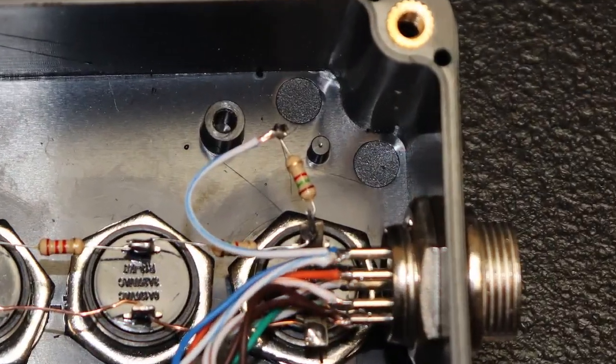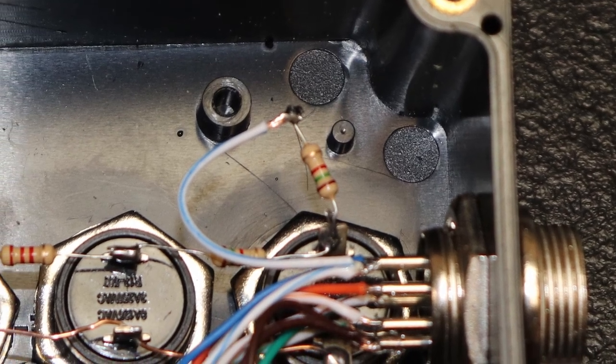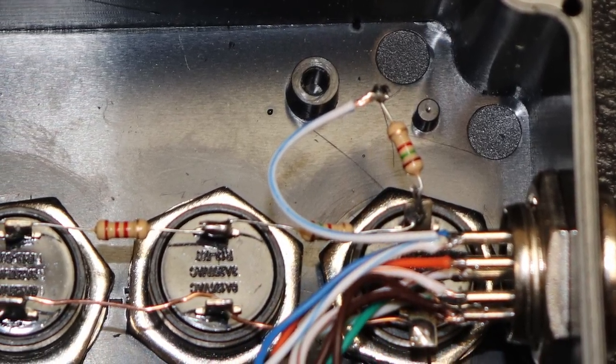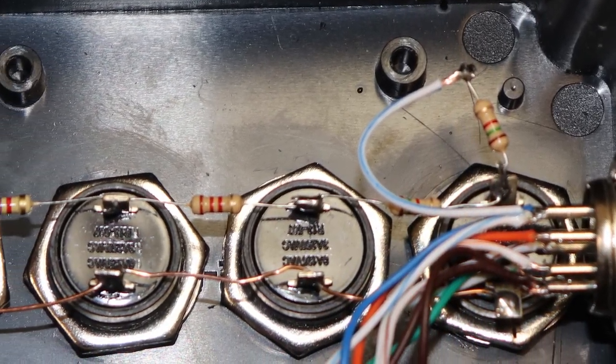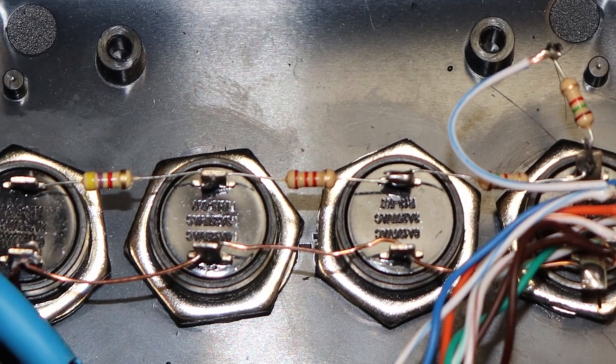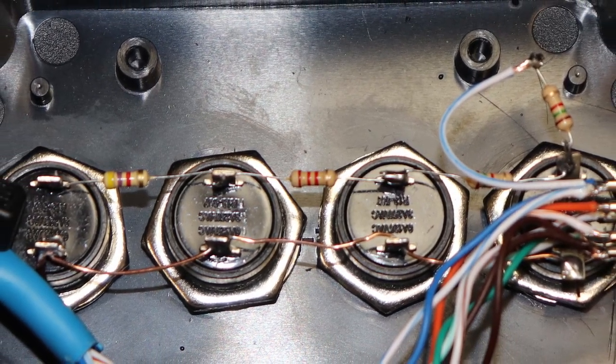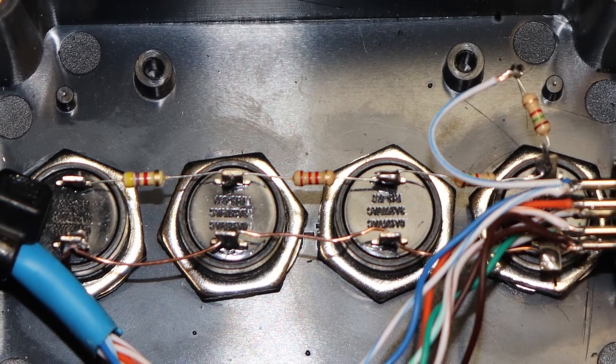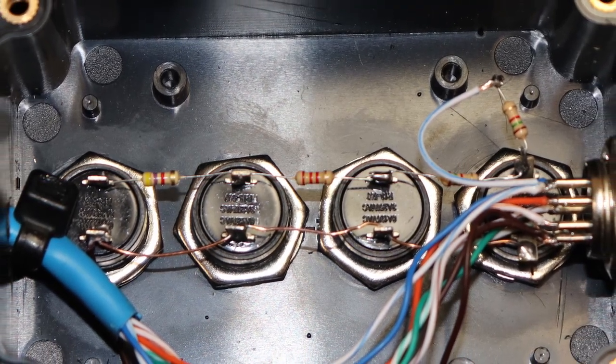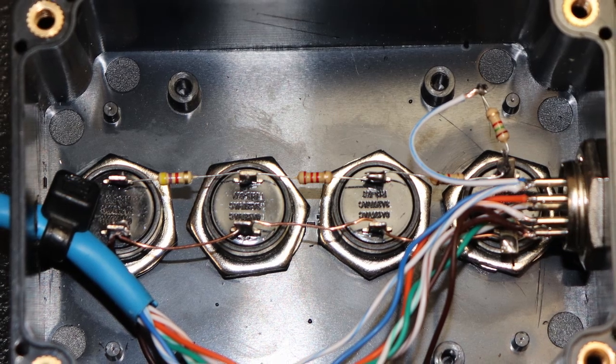The first 1.5k ohm resistor will go from the first switch directly to the pin three wire. Then the next three resistors just connect from one switch to the next, just like in the schematic. The resistor leads are long enough that we can just solder the resistors directly to the switches.